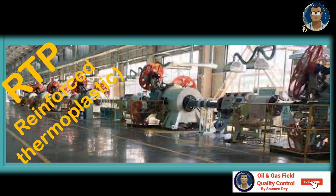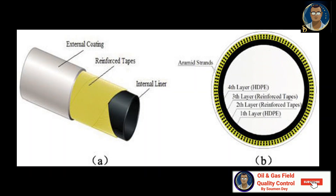Installing RTP in ground surface: the reinforced thermoplastic pipes consist of three basic layers — an internal thermoplastic liner, a continuous fiber reinforcement helically wrapped around the pipe, and an external thermoplastic jacket. The liner acts as a bladder, the fiber reinforcement provides strength, and the jacket protects the load-bearing fibers.